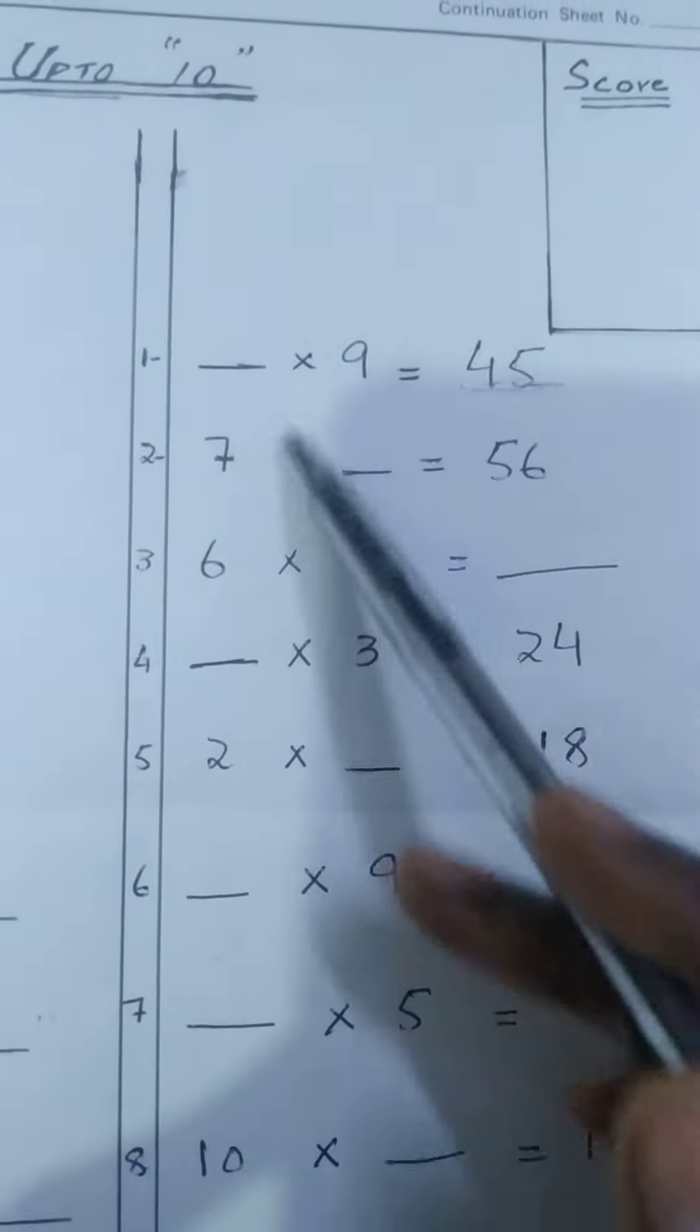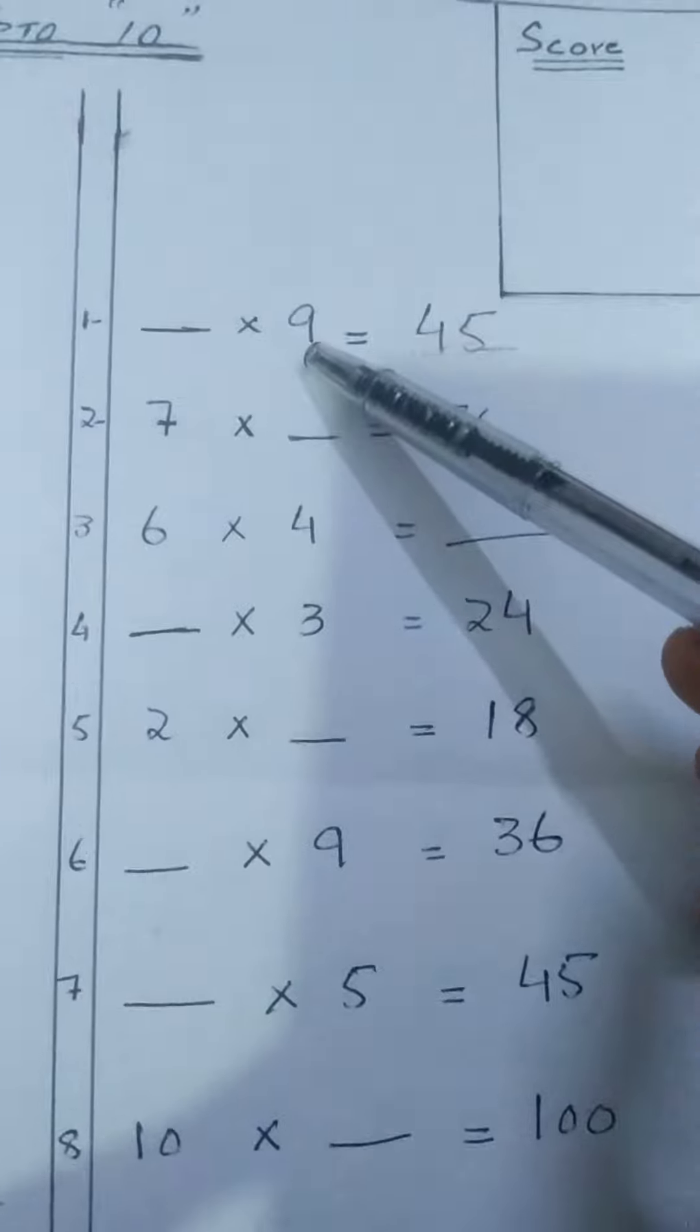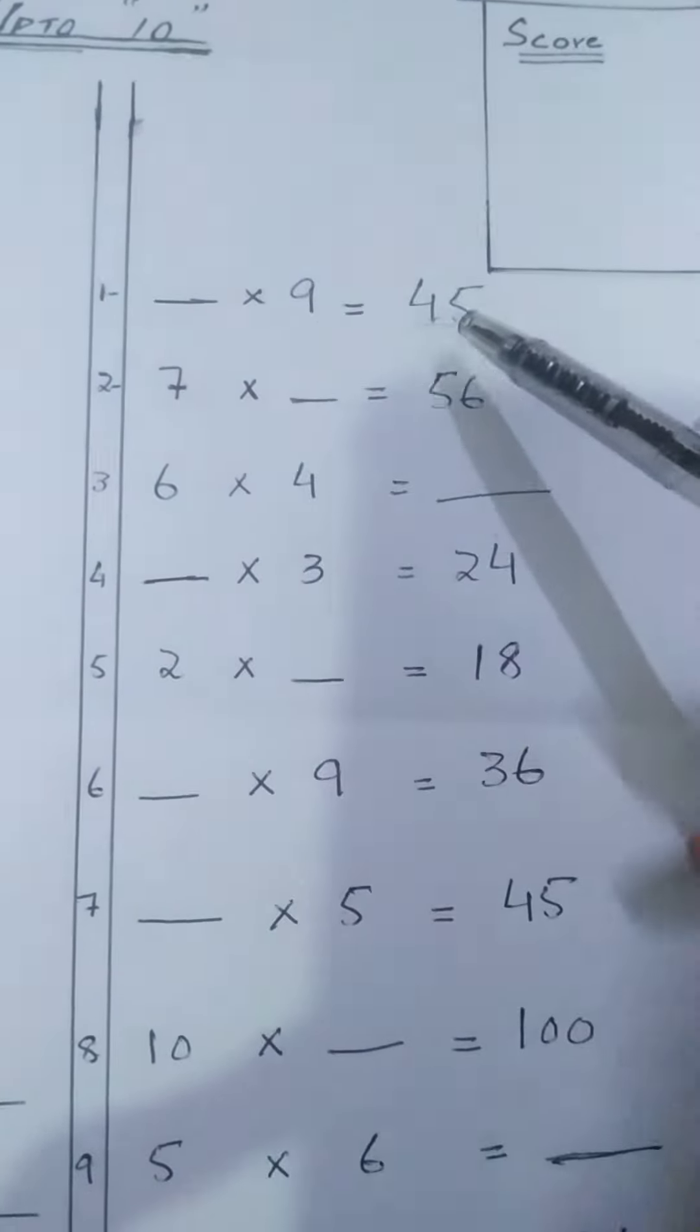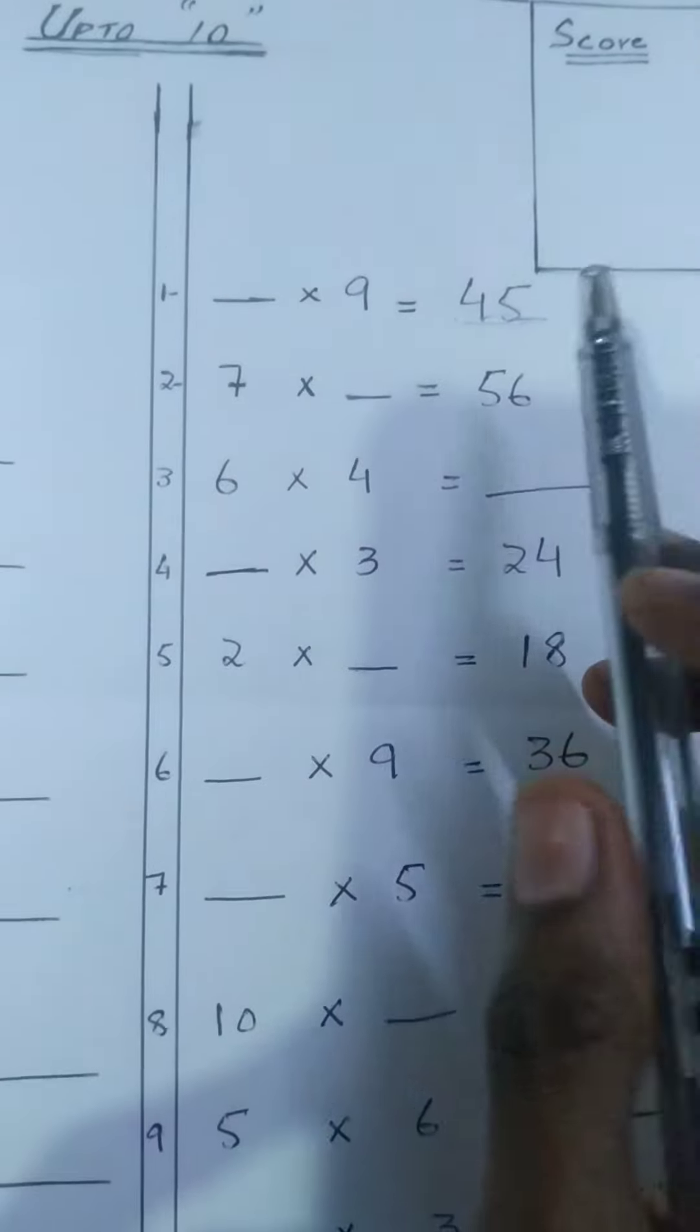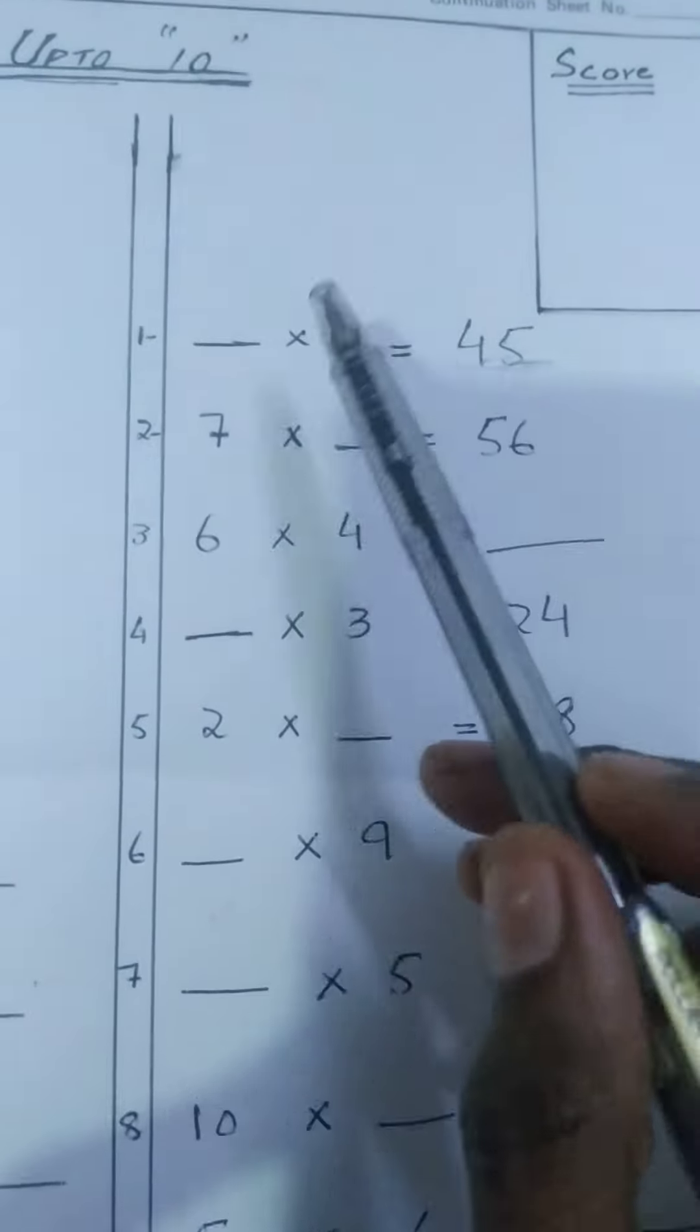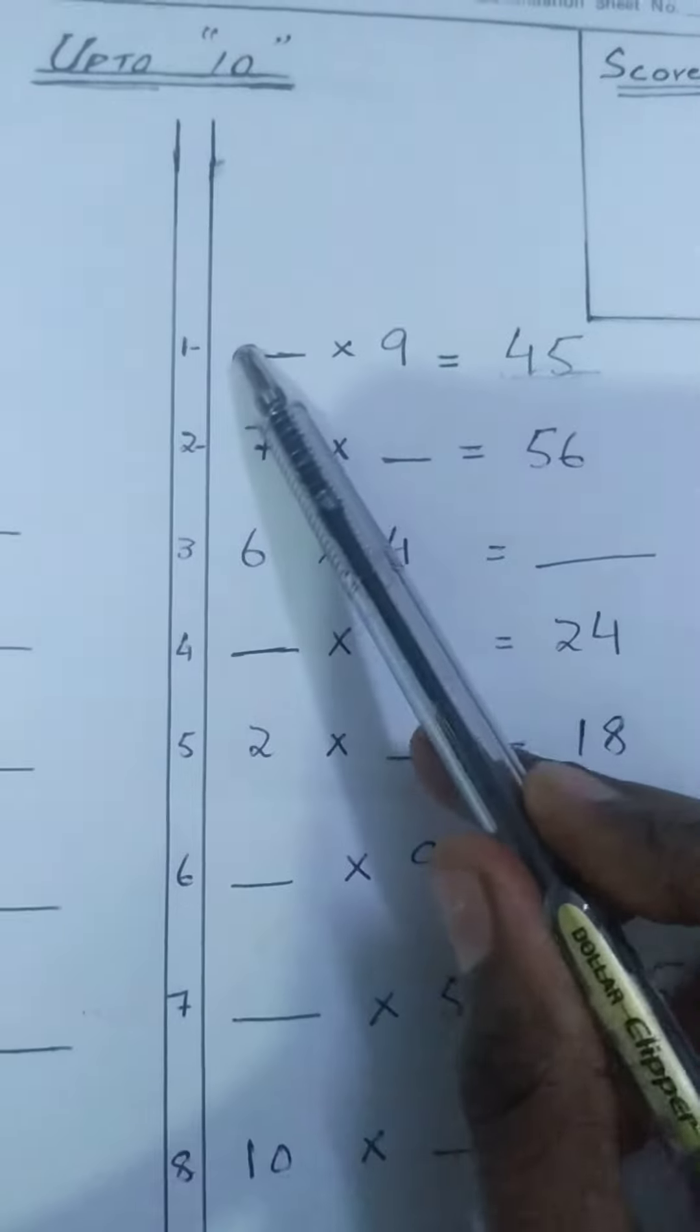You have to recall the table of 9, and in the table of 9, how many times has 45 come? So, 9, 5s are 45, so the answer is 5.